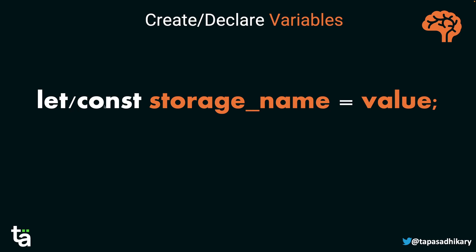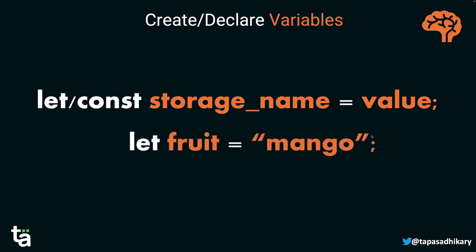There is another keyword called `var`, but we will not focus on it now. We'll cover `let`, `const`, and `var` more deeply when we discuss the scope chapter. For now, just know: keyword (`let` or `const`) + storage name + equals + value. For example: `let fruit = 'mango'` — 'fruit' is the variable name and 'mango' is the string value. That's how a variable is declared.